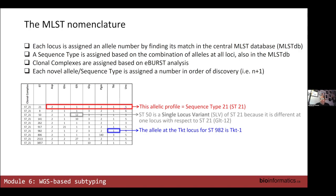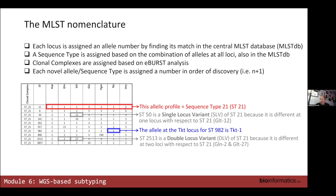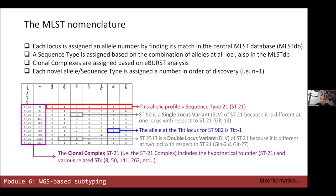A strain with one allele variation compared to ST21 is a single locus variant of ST21 — it has allele 12 instead of allele 1 at the gene called GLT. A double locus variant has two allele replacements. This entire group is called clonal complex ST21, comprising different sequence types all closely related to the founder ST21, differing by at most three allele differences — single locus variants, double locus variants, and triple locus variants.